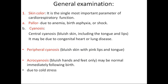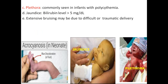Coming to general examination: as soon as the baby is born we should examine the whole body. First we will see skin color, which is the single most important parameter of cardiorespiratory function. We can see pallor due to anemia. Central cyanosis is bluish skin including the tongue and lips; it may be due to congenital heart disease or lung disease. Peripheral cyanosis is commonly seen in newborns — bluish skin with pink lips and tongue — and it will recover after 5 to 10 minutes of birth. Acrocyanosis, bluish hands and feet only, may be normal immediately following birth and is mainly due to cold stress. Plethora is commonly seen in infants with polycythemia.